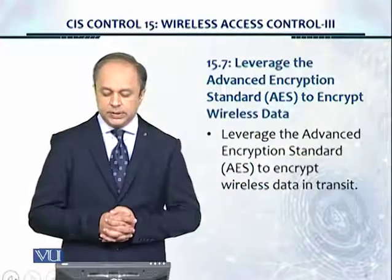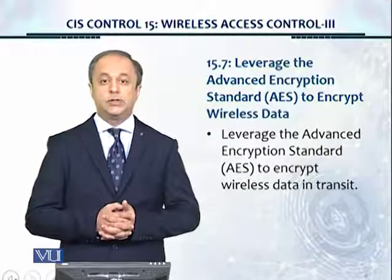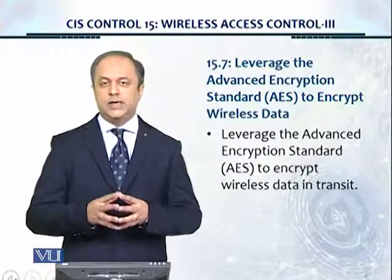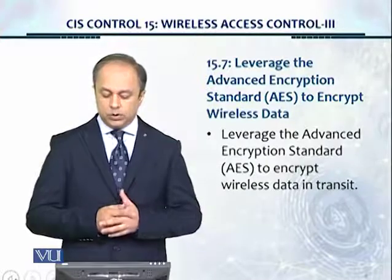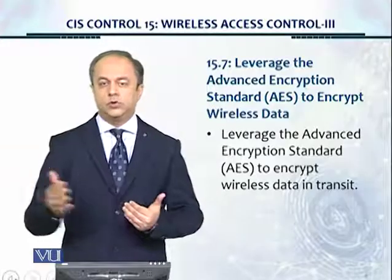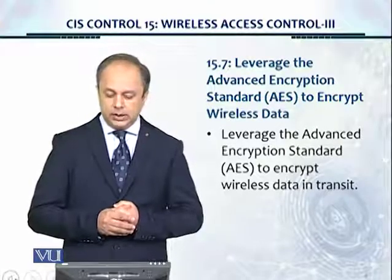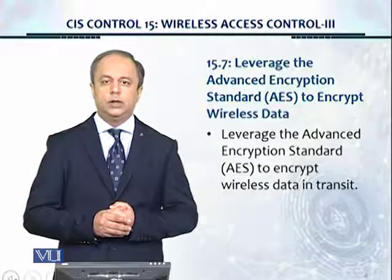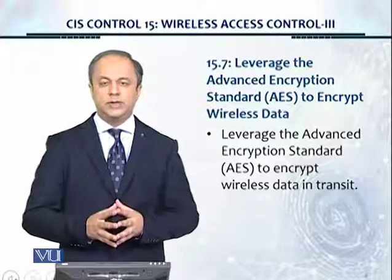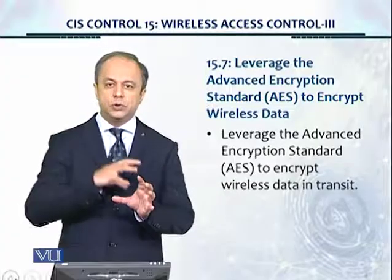Control number 15.7 tells us to leverage the Advanced Encryption Standard, or AES, to encrypt wireless data. This is part of the settings when you set up the wireless access point — you need to make sure you are using encryption, and all traffic transmitted or received is encrypted via AES. This is the recommended encryption standard. These settings can also be controlled centrally; if you have, say, 20 or 100 wireless access points, they can all be controlled by a central wireless controller.